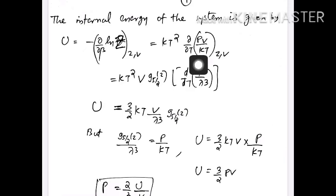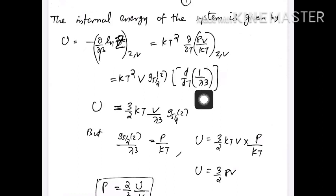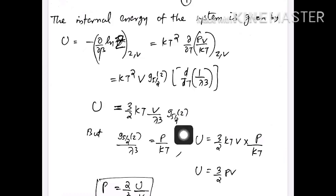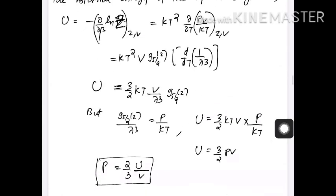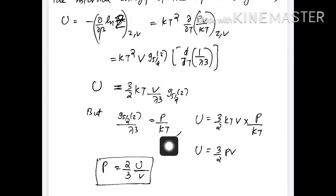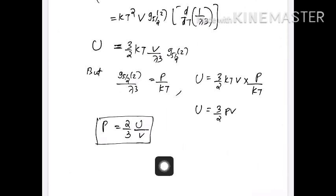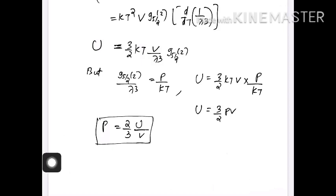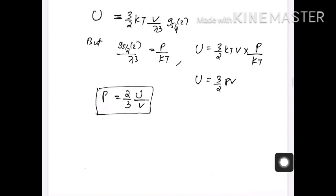We differentiate with respect to temperature, keeping z and V constant. When we differentiate, since we have lambda^3 in the denominator, we get a factor of 3/2 kT. Substituting back, since g_phi(z)/lambda^3 is p/kT, we get the result U equal to 3/2 PV, or equivalently P equal to 2/3 of the energy density. This is a general relation: the pressure equals 2/3 of the energy density.